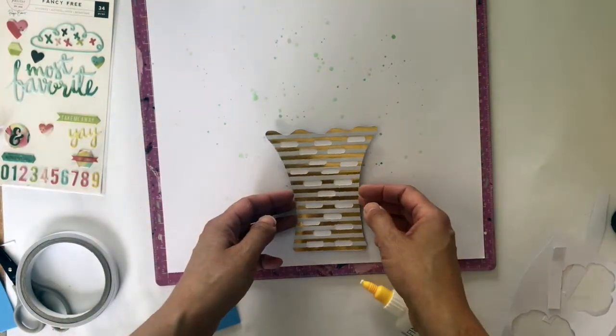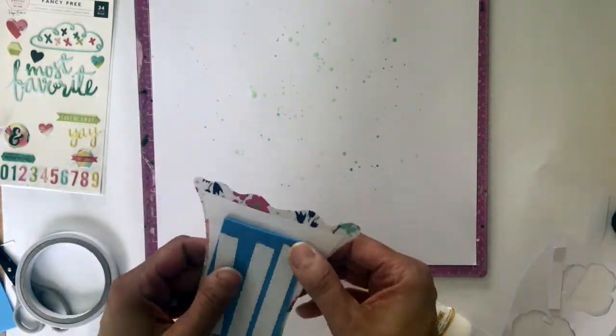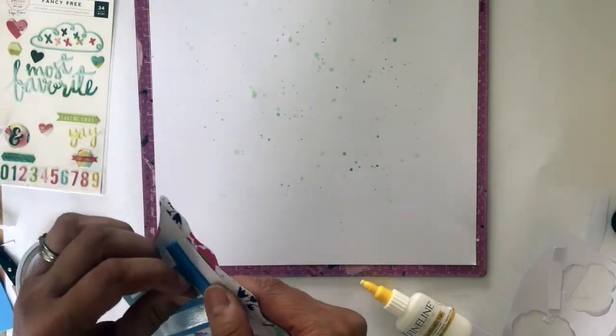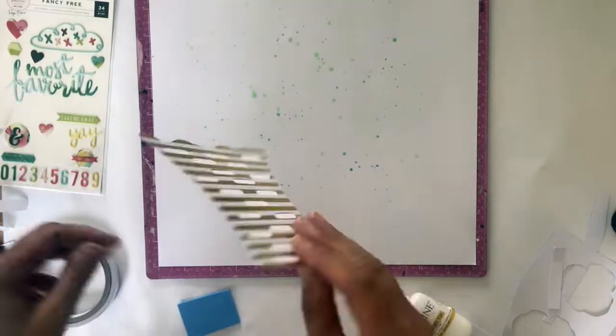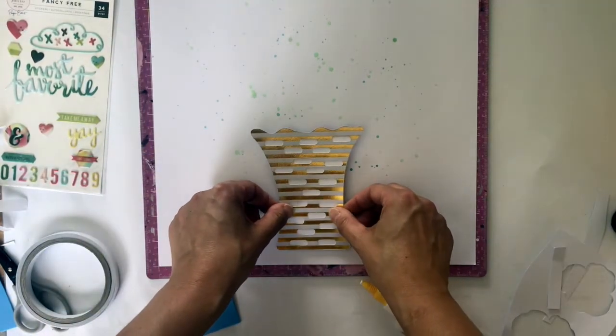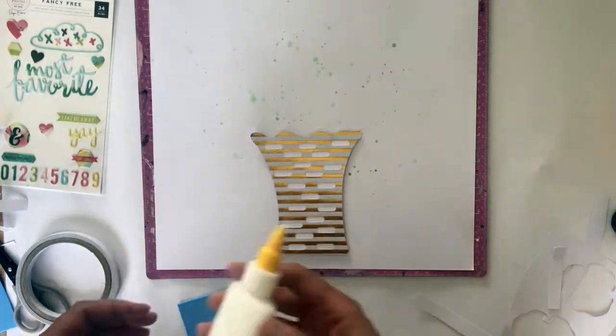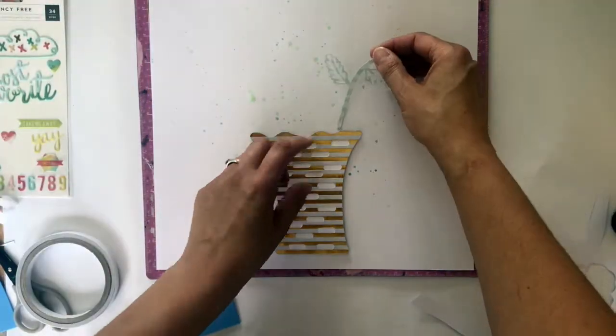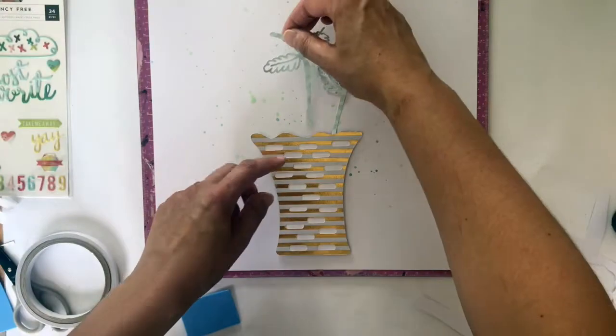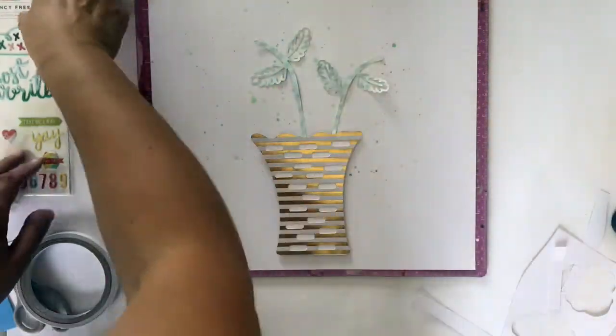I use my mat here because I wanted to find the center to make sure that that vase ended up centered. So just adhering that there, and it's not perfect. I just sort of eyeballed where the center was.